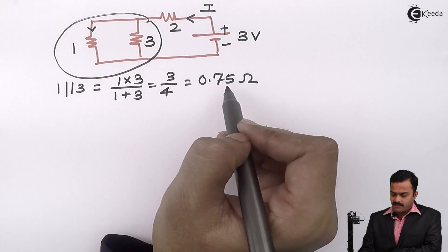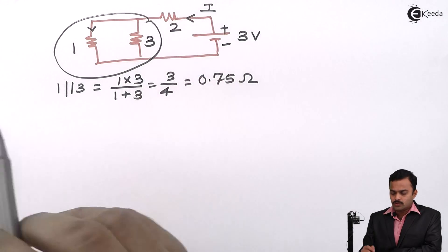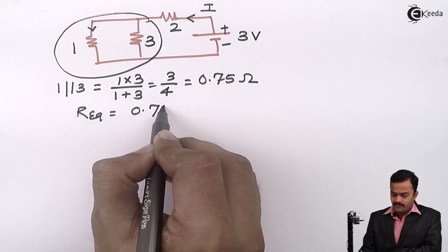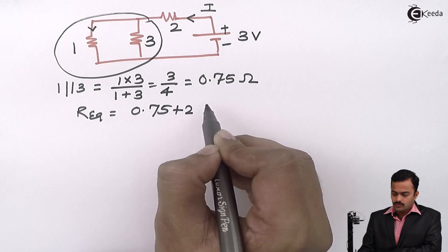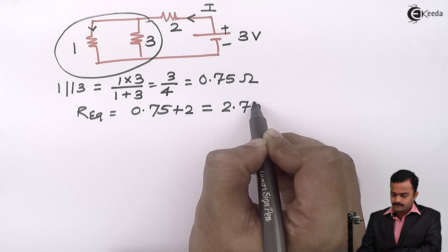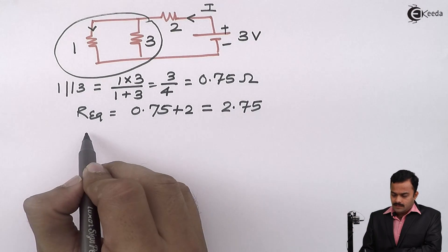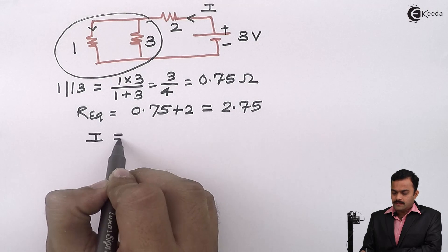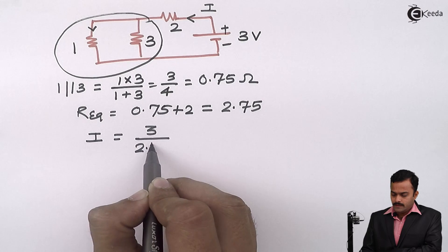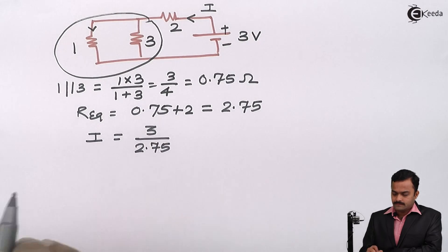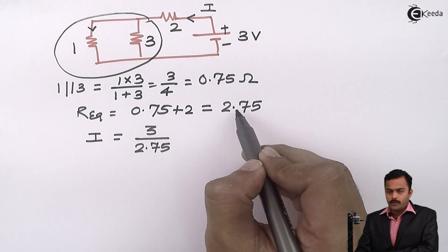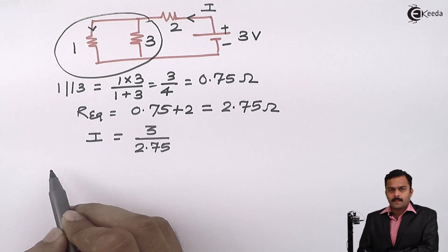0.75 will come in series with this 2 ohm. R equivalent I will get 0.75 plus 2 which is equal to 2.75. And then, I can get the value of I as 3 divided by 2.75. R equivalent will be 0.75 plus 2 which is 2.75 ohm. Then, current given by this battery will be 3 divided by 2.75 which is equal to 1.0909 ampere.